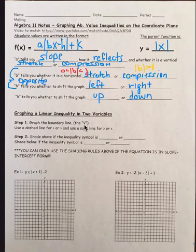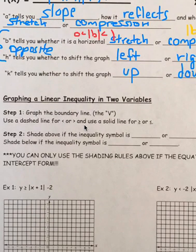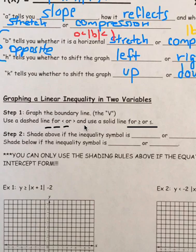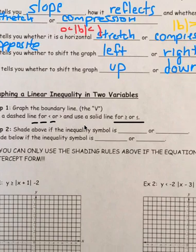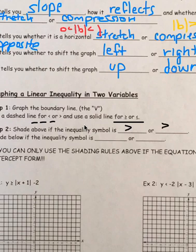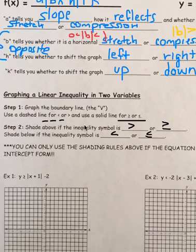Now we're going to be graphing a linear inequality in two variables. Inequality means we're going to have less than or greater than, or greater than or equal to, or less than or equal to. We use a dashed line to signify less than or greater than, and a solid line when it's equal to. If there's a line underneath the symbol, use a solid line. We shade above if the symbol is greater than, and below if it's less than.